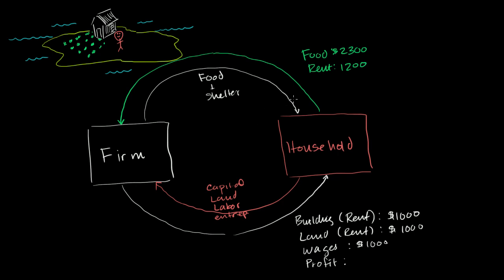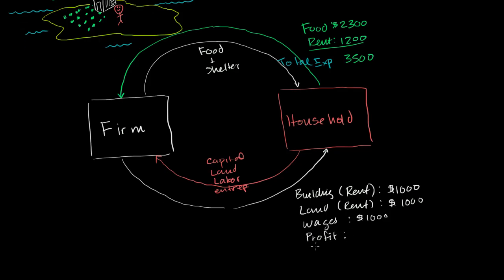So a couple of ways to think about it. You can look at it from the household's point of view. What are his total expenditures? Well, total expenditures come out to $3,500. This is total expenditures for this household. And what's his total income? Well, he gets $1,000 for the building, $1,000 for land, $1,000 for wages, and he gets some profit from that firm. So we don't know what that profit is, so why don't we hold off a little bit on his total income. We have to figure out how much profit he's getting from the firm.